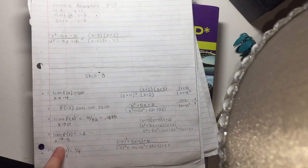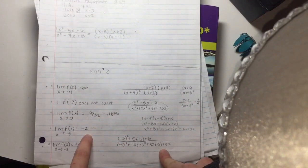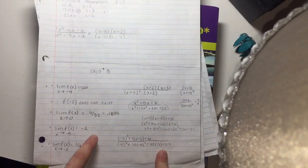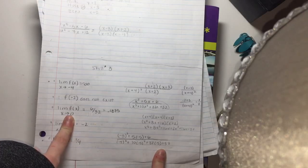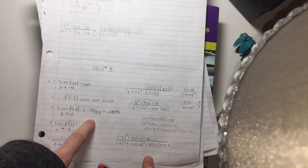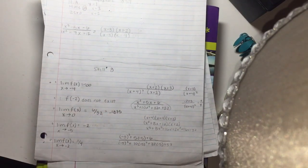And then when x is approaching negative 5, I just plugged it in right here, and I got negative 2 as the limit. And for the limit of x approaching 0, I just plugged in 0, and I got 6 over 32, which is 0.1875.